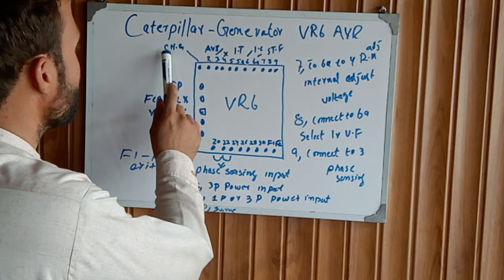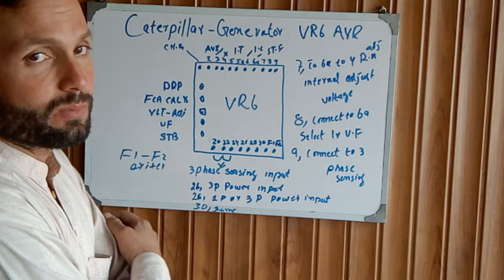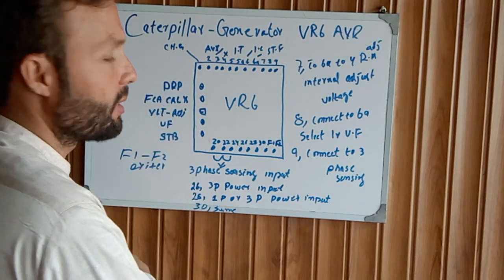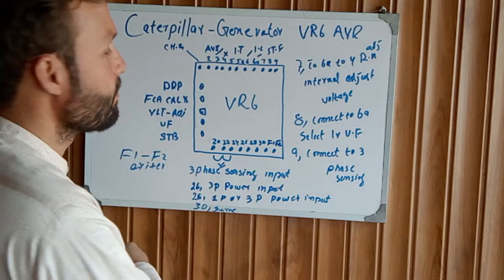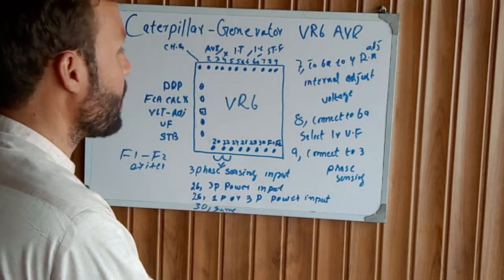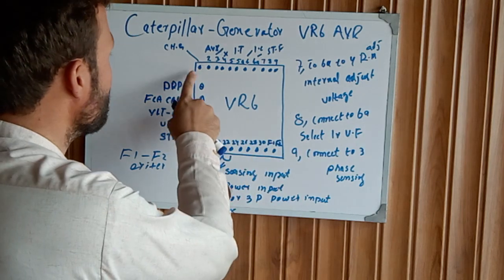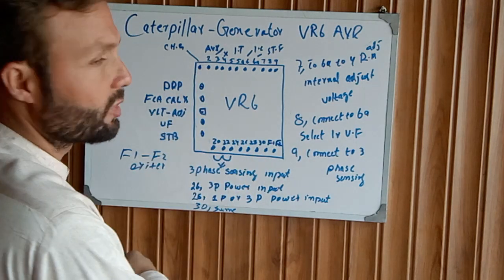Number 1, that's CHG. CHG means chassis ground. This is our ground from the generator chassis body to this one.